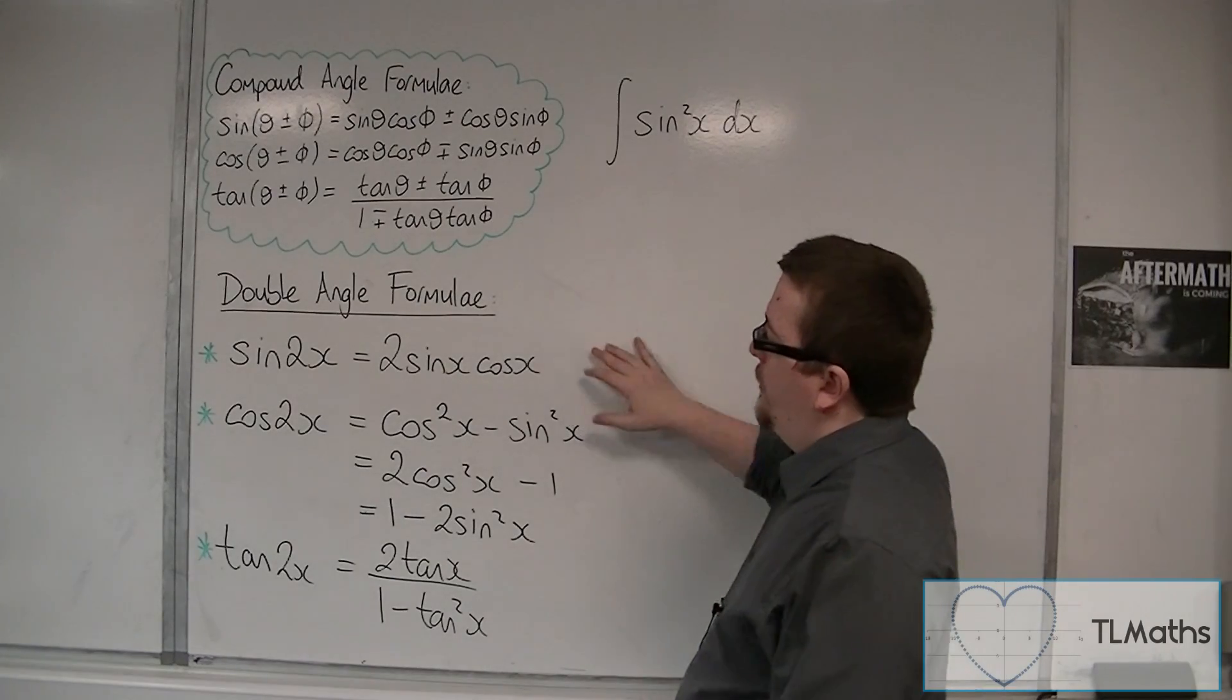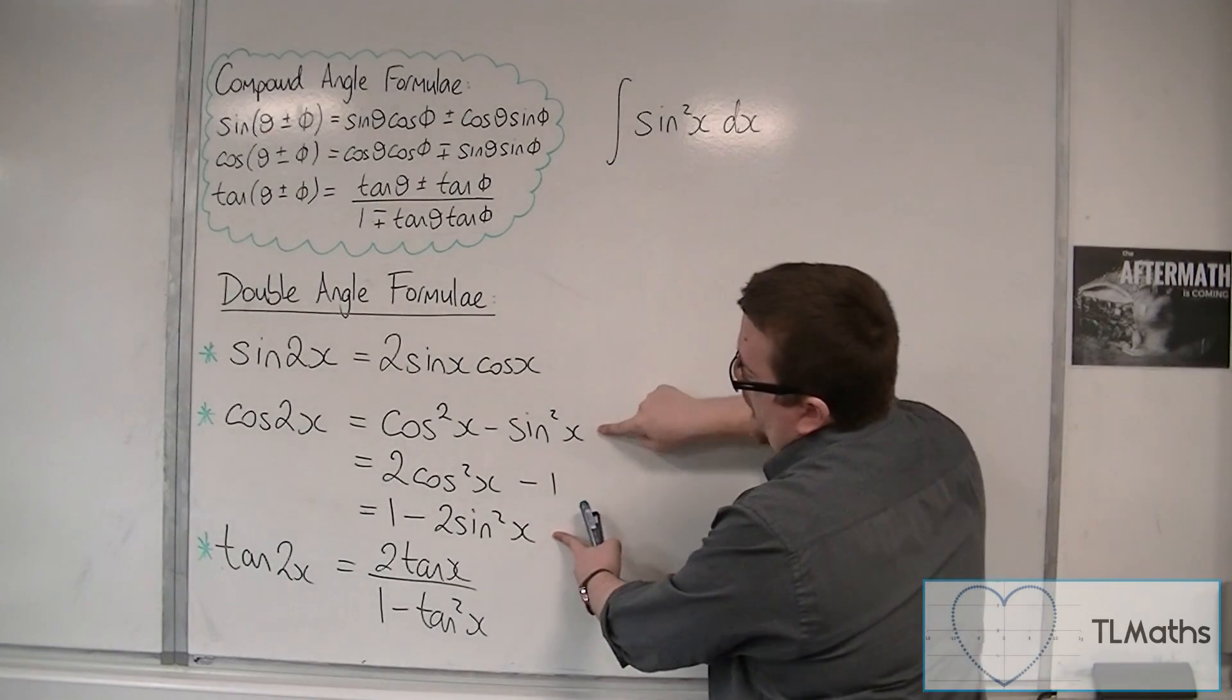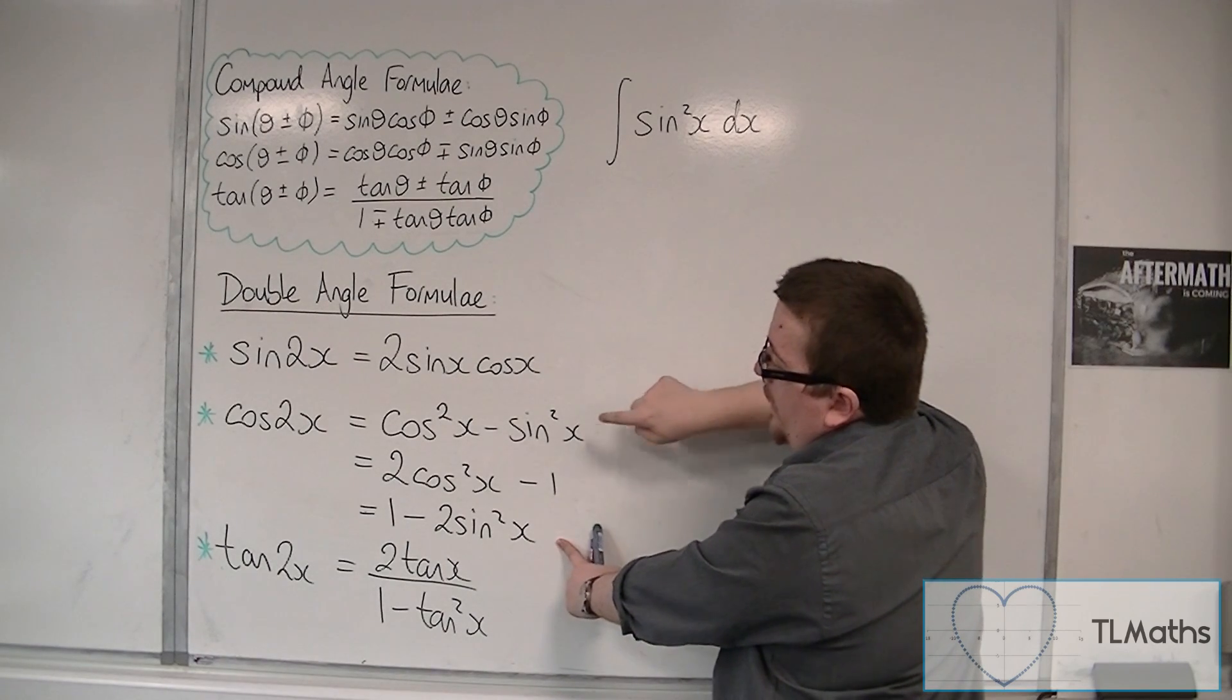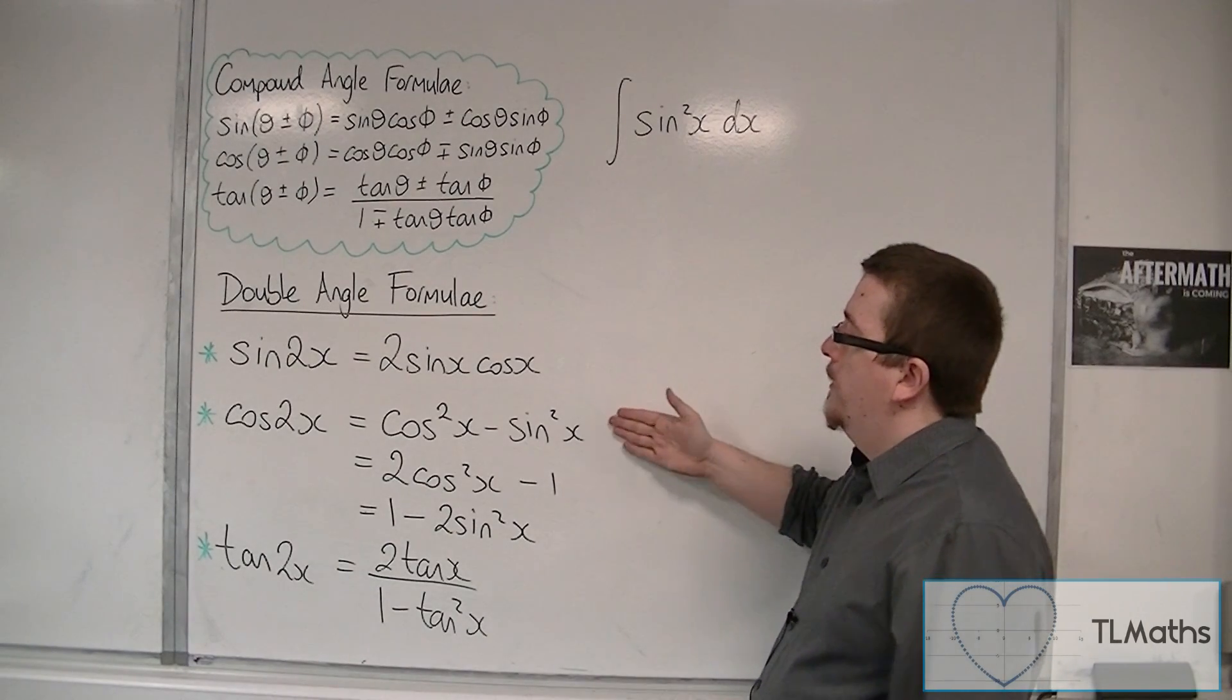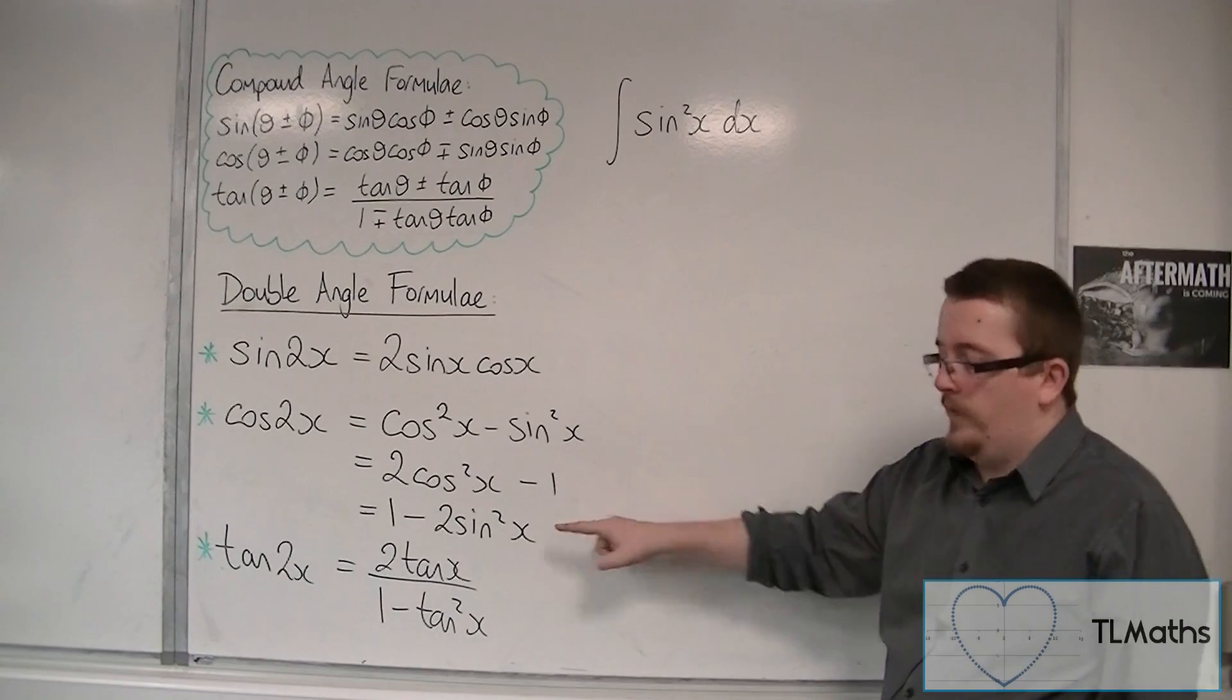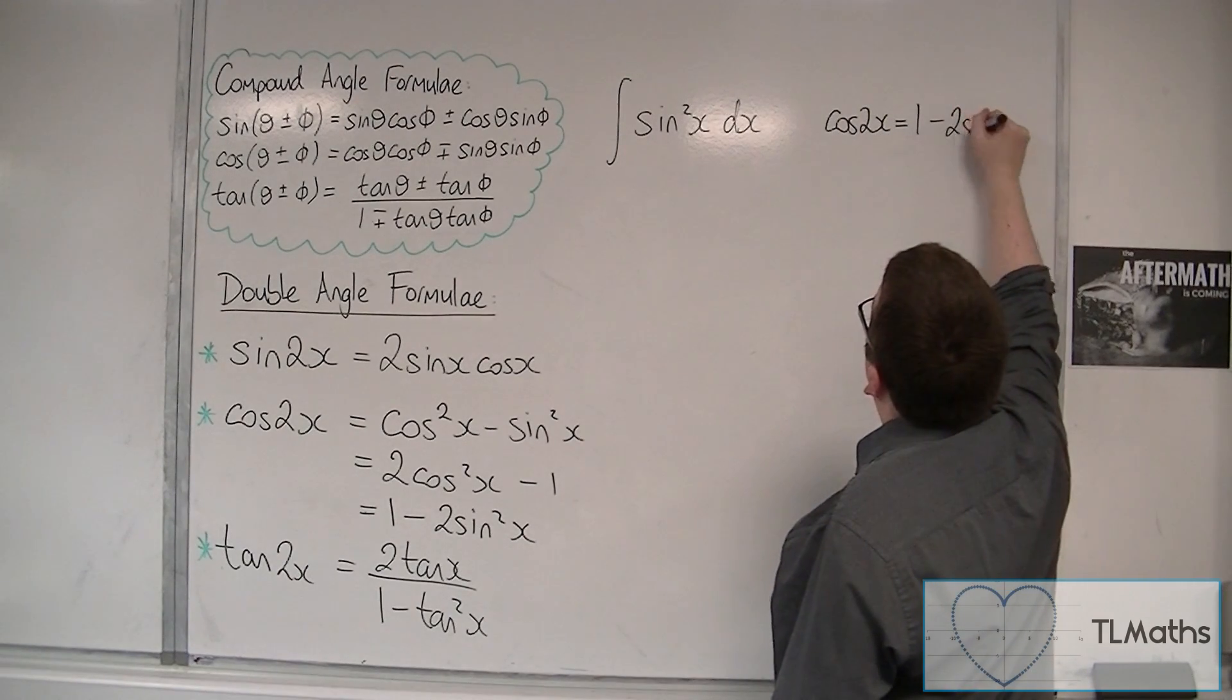So look at the double angle formulas that we have, and what you want to do is you want to look for the sine squared. Now sine squared appears here and here. This one I wouldn't use. Really, the most useful ones for cos 2x are these two here. This one kind of gets you to those two, but it's these two that are the most useful. So it's this one that I'm going to use here: cos 2x.